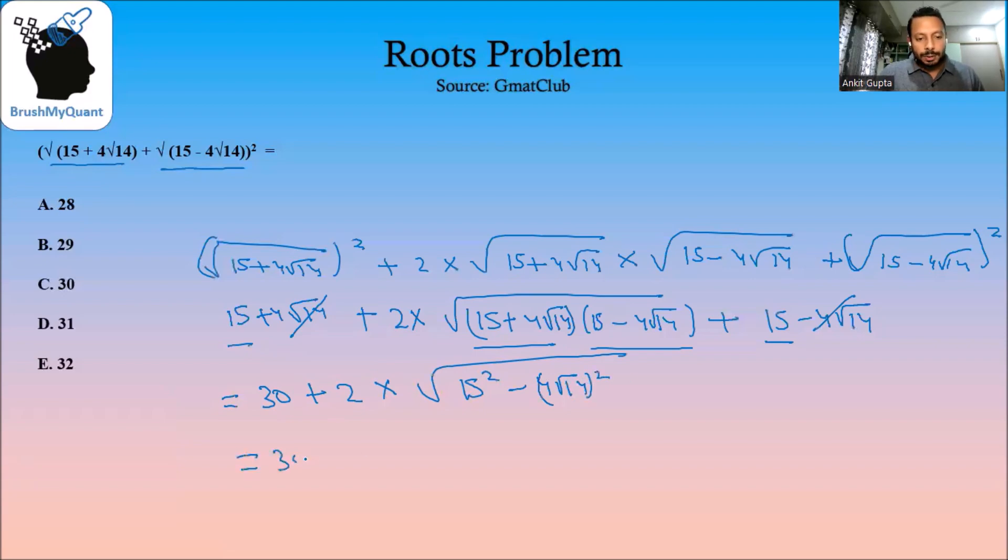So which is nothing but 30 plus 2 multiplied by 15 squared is 225 minus 16 into 14 whole square root. So answer will be option number E.